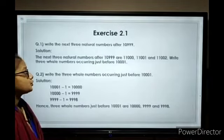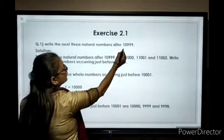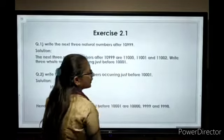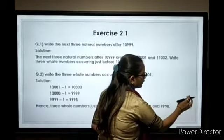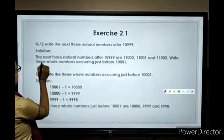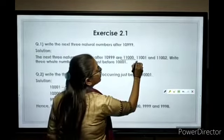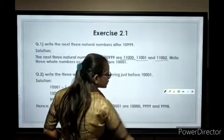Exercise 2.1: Write the next 3 natural numbers after 10,999. The next 3 natural numbers are 11,000, 11,001, and 11,002.